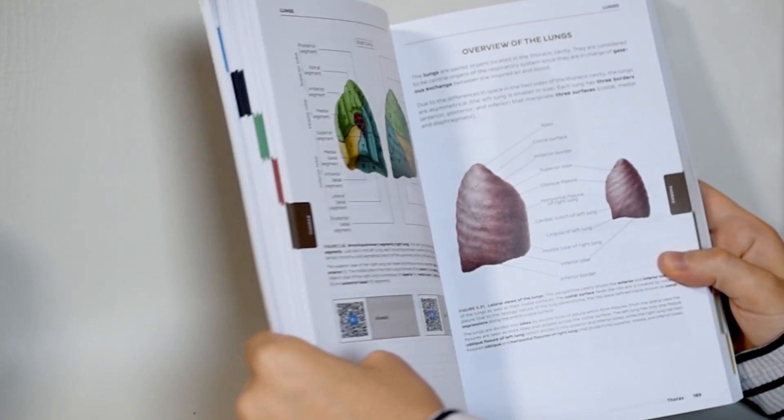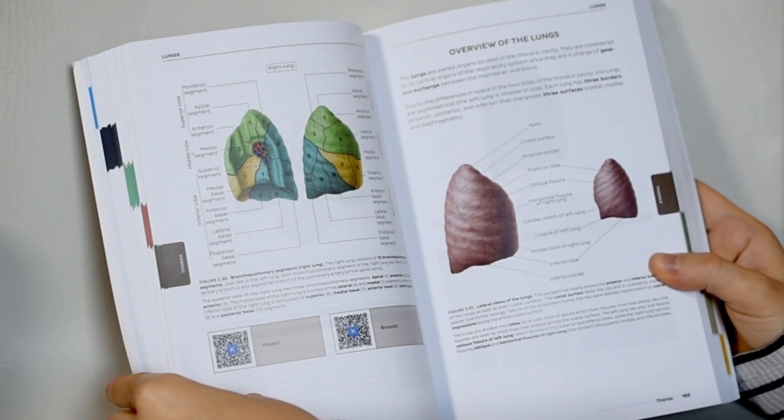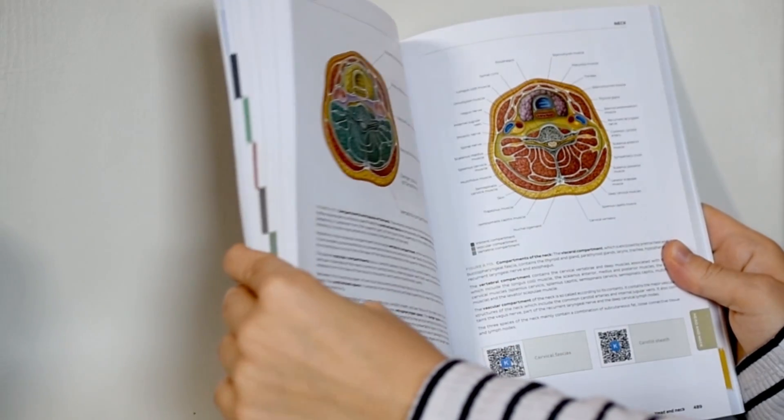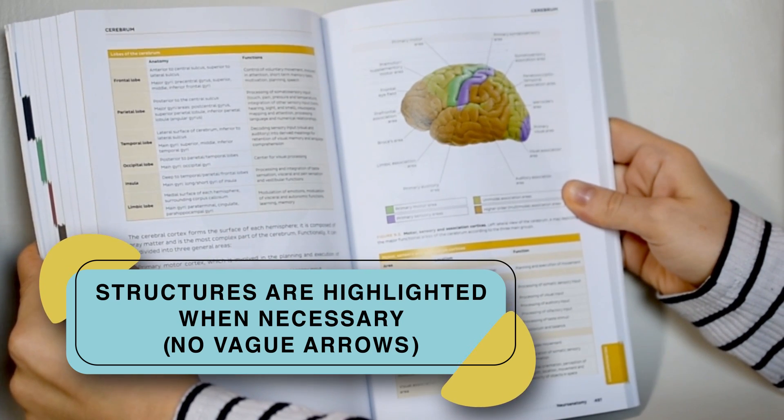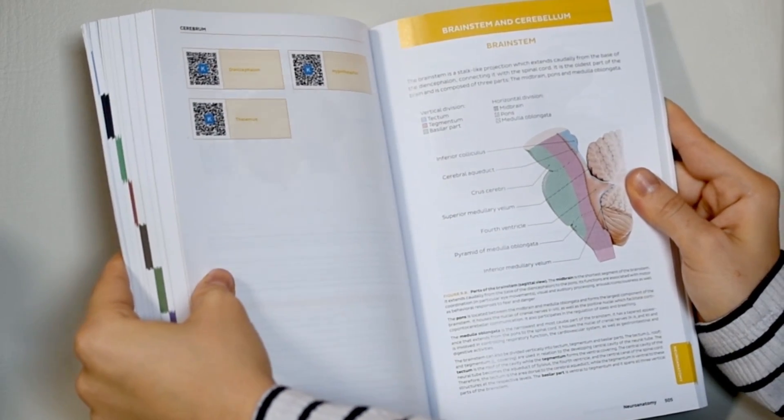One of my favorite things about Kenhub's anatomy illustrations is that they don't just draw arrows to structures. When necessary, they highlight them. Too many resources out there just point a vague arrow at the general location of a structure.